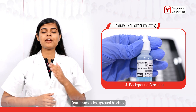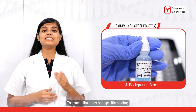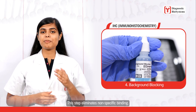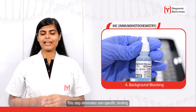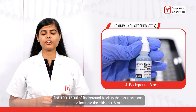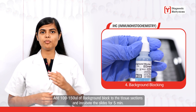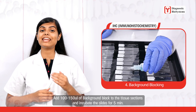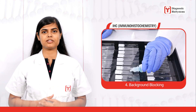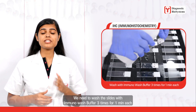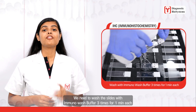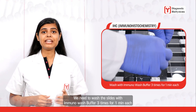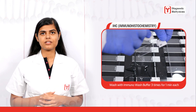The fourth step is background blocking. This step eliminates non-specific binding. Add 100 to 150 microliters of background blocker to the tissue sections and incubate the slides for five minutes, then wash the slides with immunowash buffer three times, one minute each.